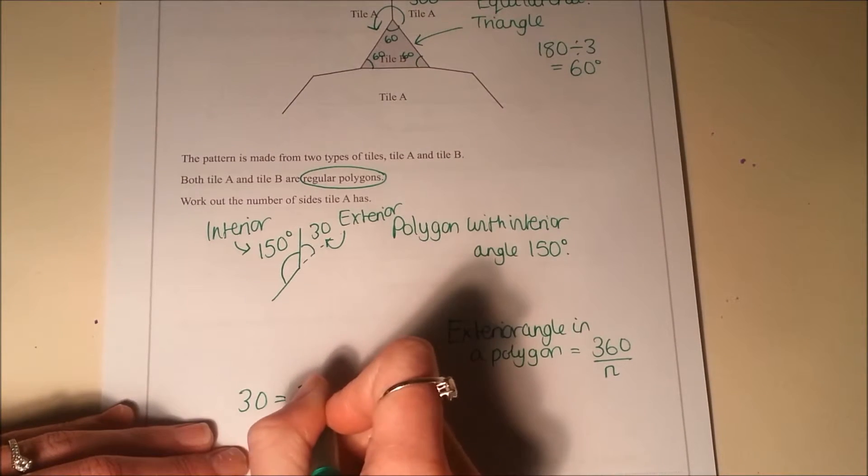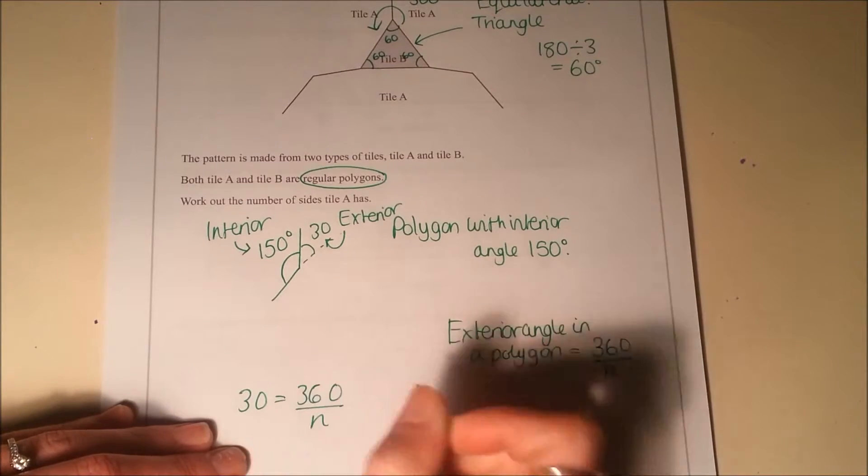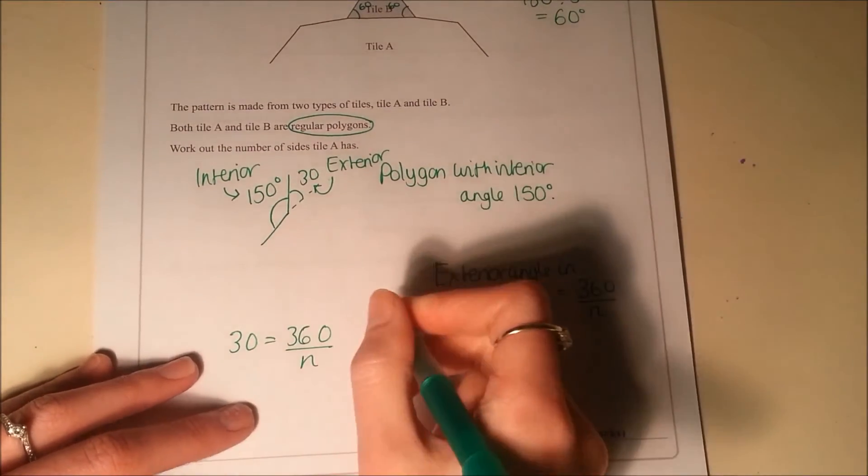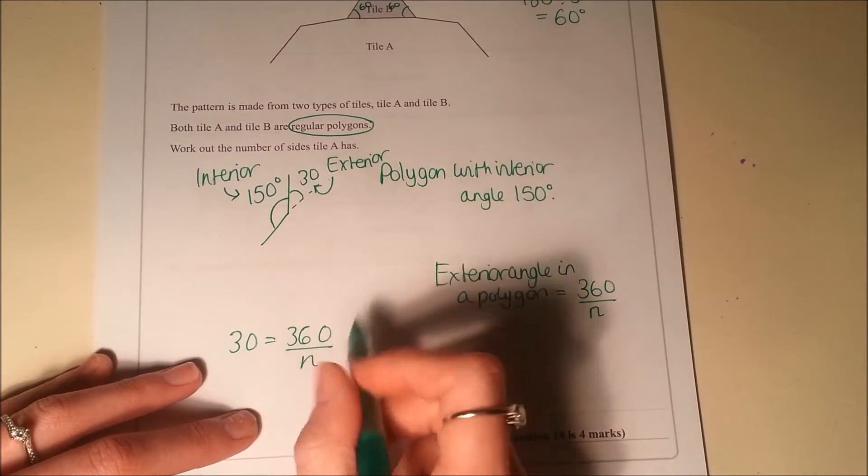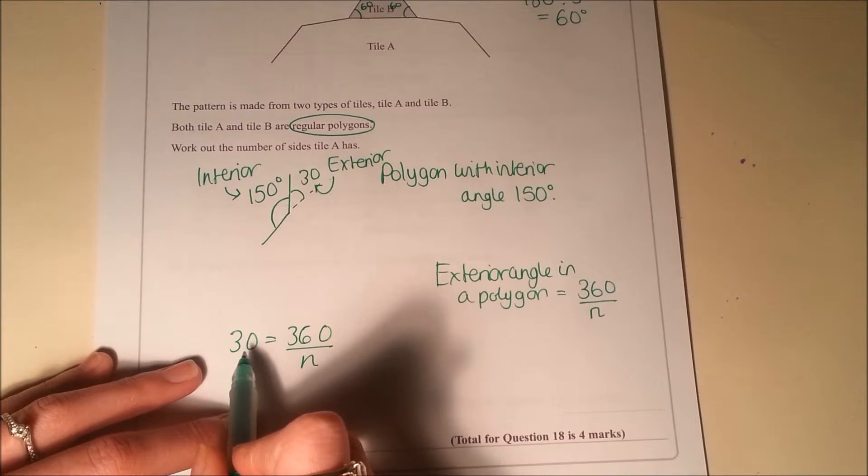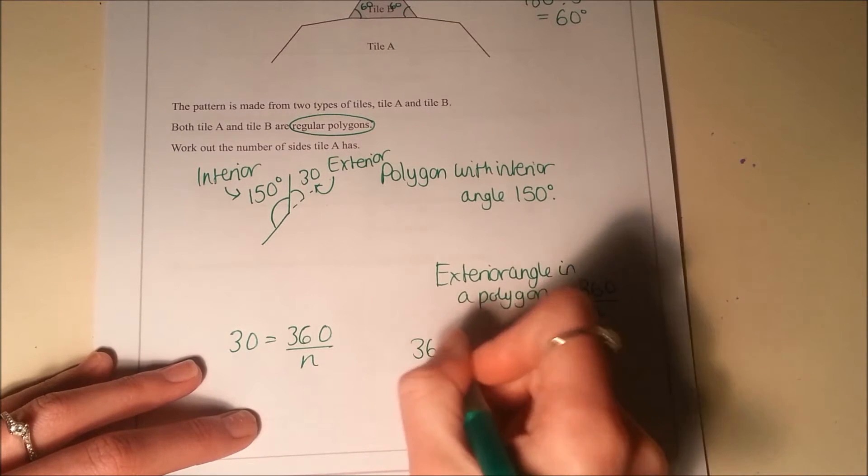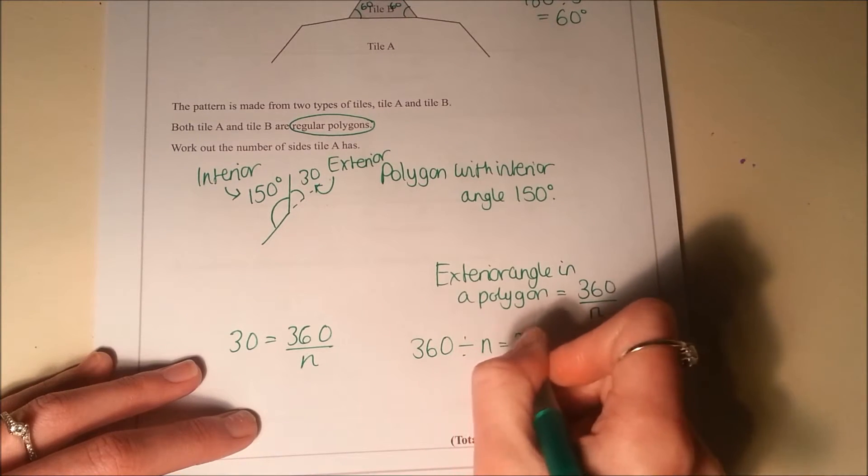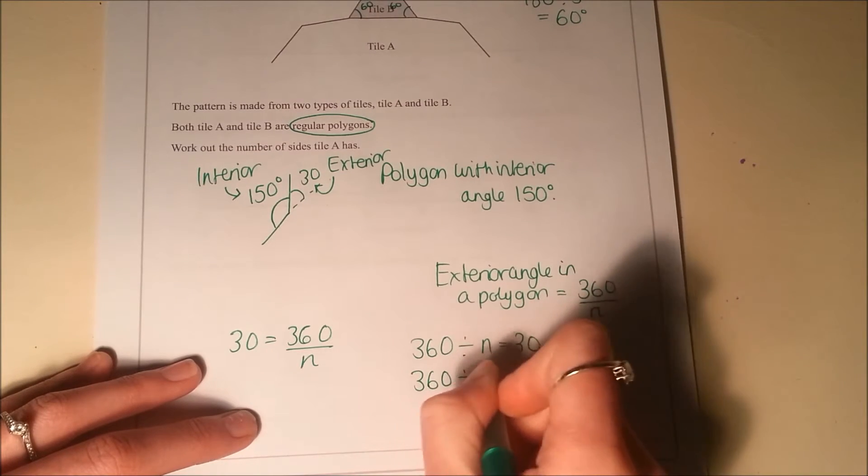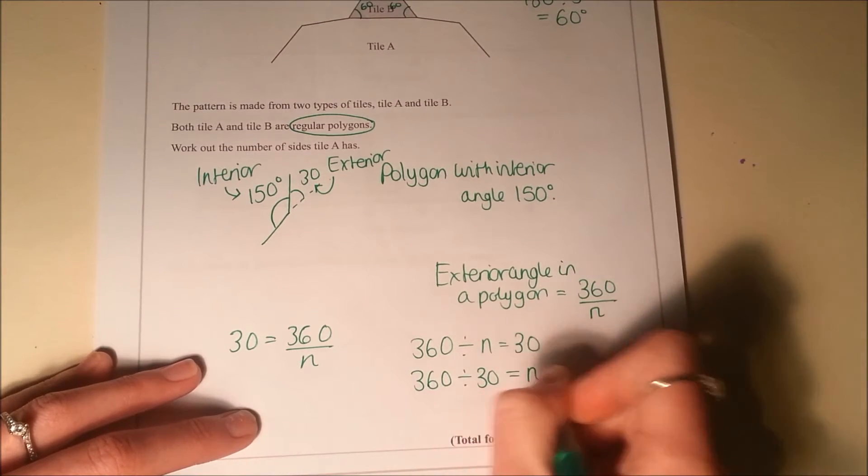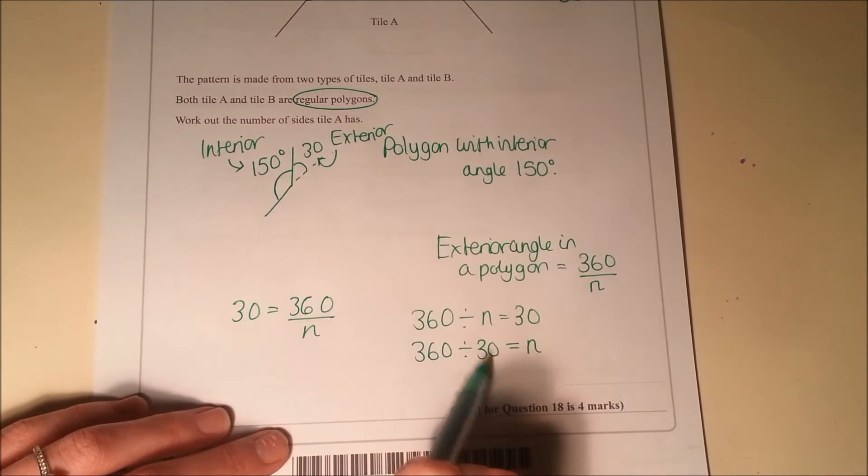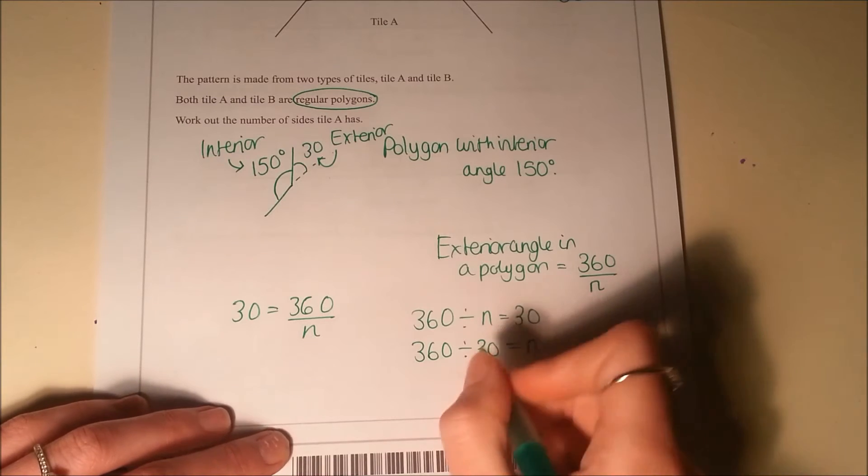So I've got a little equation to solve here. I mean you can solve it like an equation or you can just solve it by kind of reasoning. So 360 divided by something is 30. Then also 360 divided by 30 is going to have to give us what that number is. So what I can do then is just say, how many times does 30 go into 360?